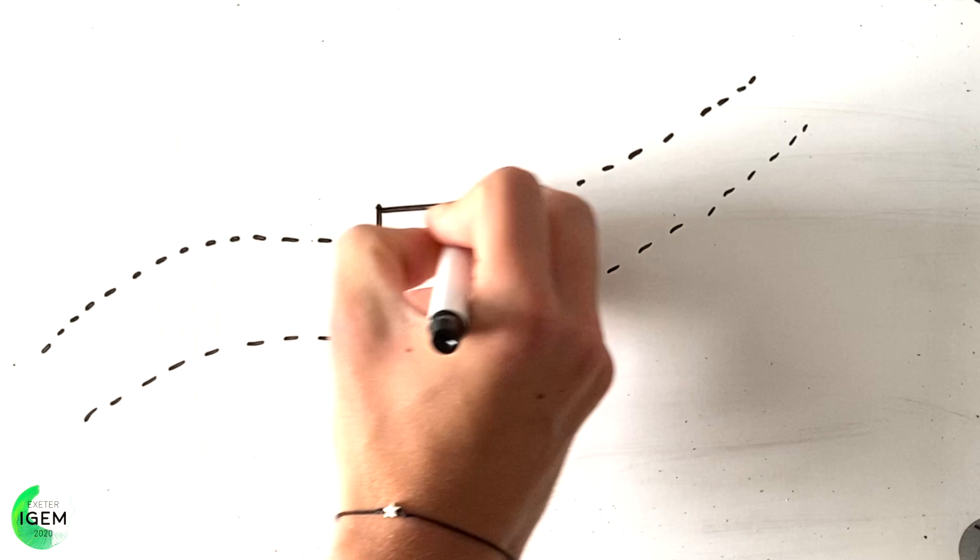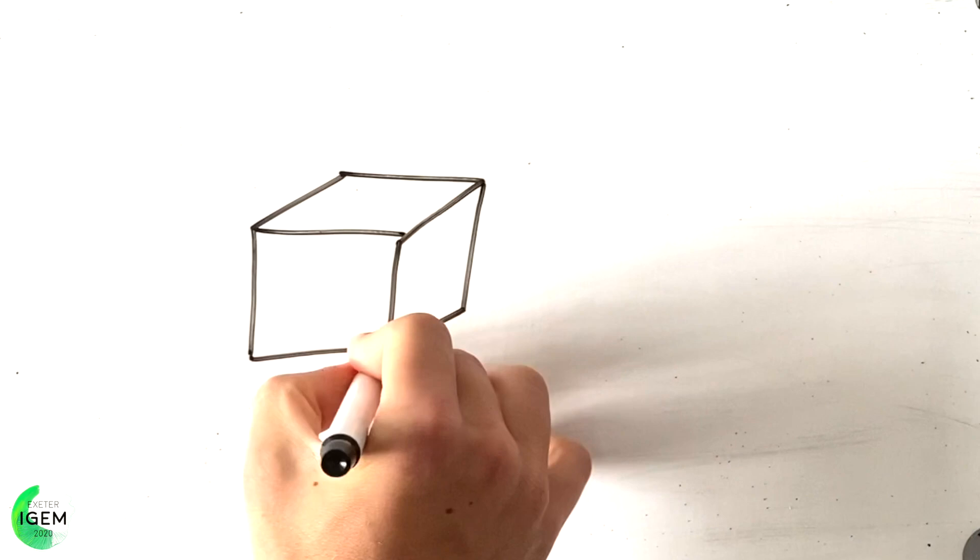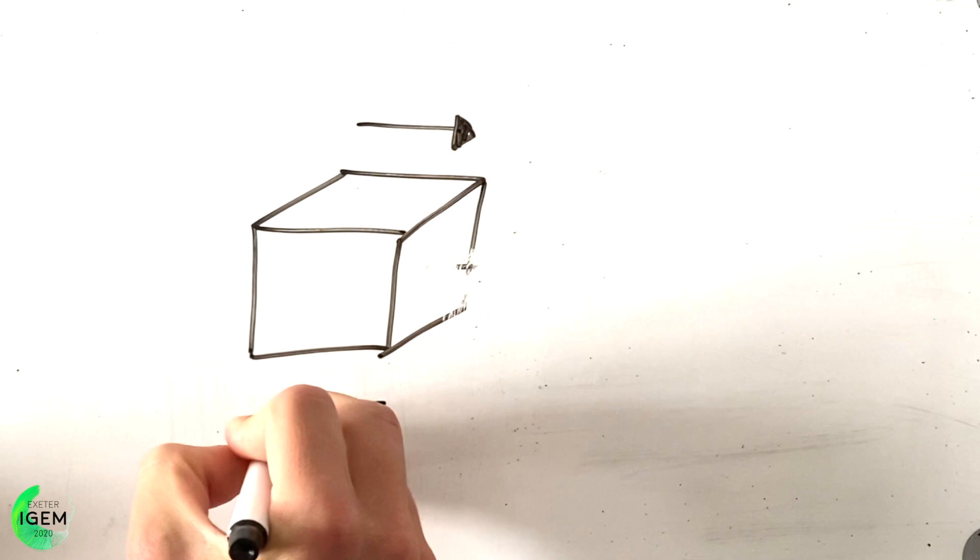So let's consider a parcel of fluid moving through a current. The parcel is going to have two types of force acting on it as it moves through. It's going to have inertial forces, which arise from differences in the pressure, but also viscous forces, which actually distort the volume of the cube. This can be written mathematically as the famous Navier-Stokes equation.